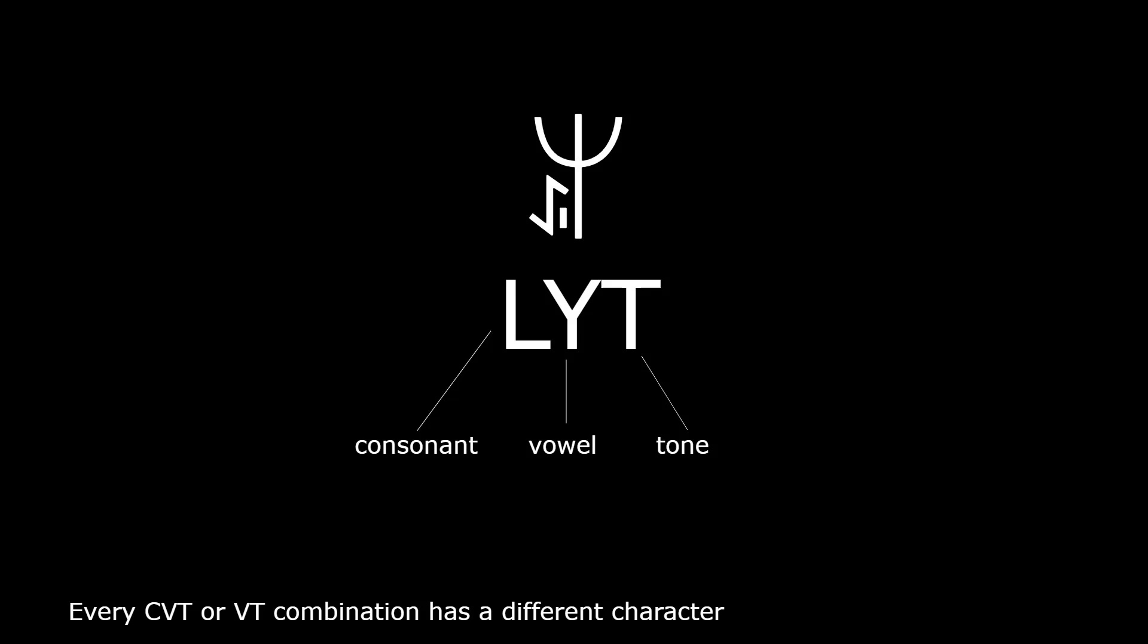Every syllable has an initial consonant, a final vowel, and a tone. There are no final consonants, unlike in Chinese. The syllables can also be represented in Niu Pinyin, or as it's known in Norse.